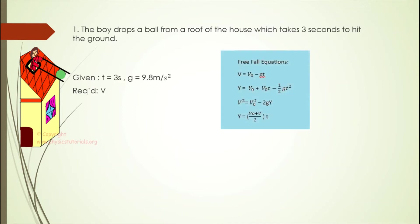We are going to use equation number 1, where there is V, gravity, and time. Solution: since our initial velocity is 0 — because the boy just dropped the ball, not threw it — there is no initial velocity. Our final velocity is equal to negative 9.8 m/s² times 3 seconds. It is negative because the motion is downwards. So the velocity is negative 30 meters per second.